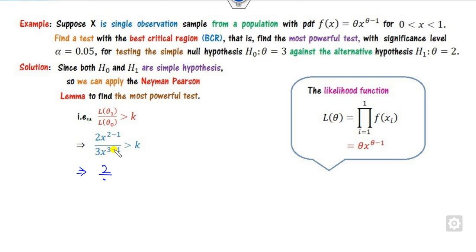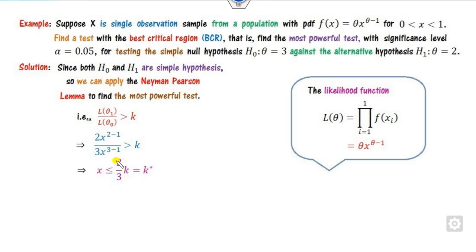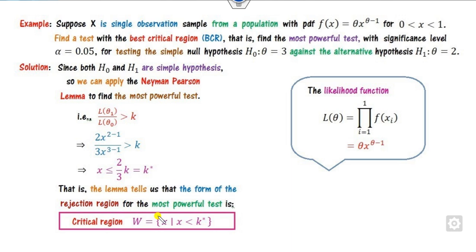The likelihood ratio gives: 2/(3x) is greater than K, which means 2/(3K) is greater than x, so x is less than 2/(3K). I call this value k*. The critical region is therefore W = {x : x ≤ k*}. This completes step 1.